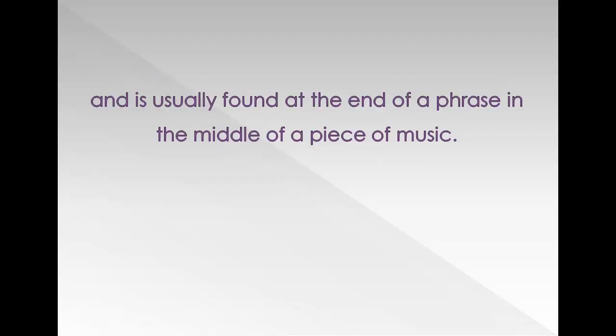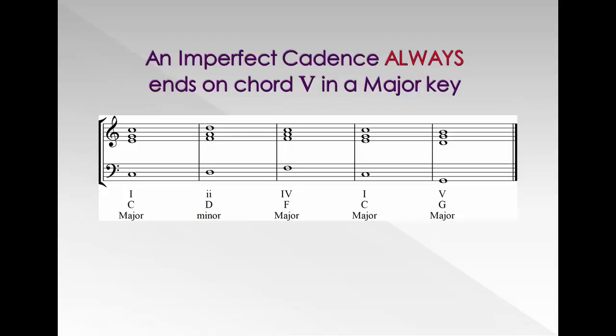An imperfect cadence will usually be found at the end of a phrase in the middle of a piece of music. An imperfect cadence always ends on chord V.